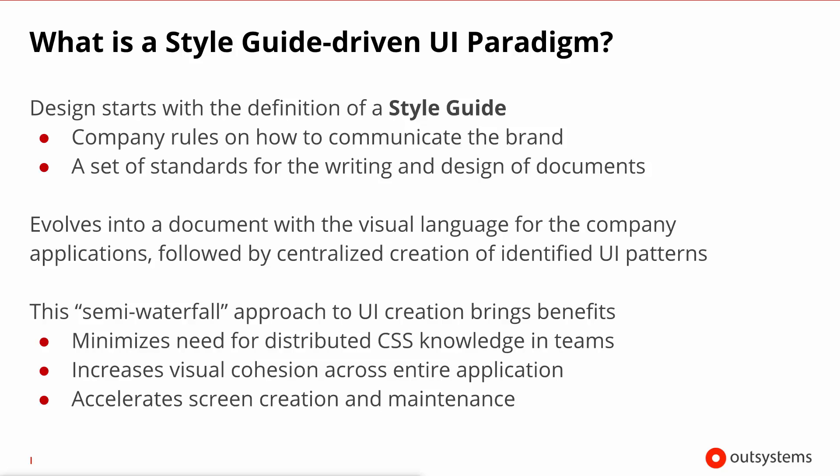This paradigm states that you should first start by creating a style guide that describes how a certain company's brand should be communicated. This style guide is not specific to software development, but rather it dictates how the look and feel of all the touch points of a certain company — for example the heading of the paper — should appear. This then trickles down to the definition of the look and feel of the applications of that corporation.